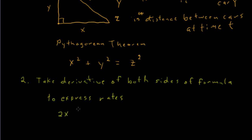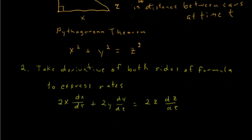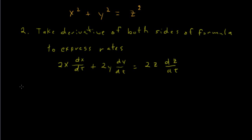So the derivative of x squared is 2x times dx/dt plus, and the derivative of y squared is 2y dy/dt, all with respect to t. And also the derivative of z squared is 2z dz/dt. And it's the dz/dt that we're after in this problem. We want to know how fast the distance between the cars is increasing.